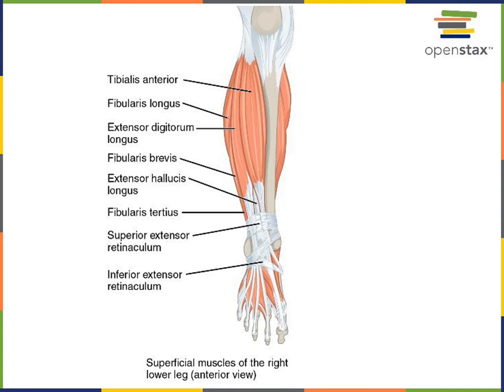Tibialis anterior is located just lateral to the anterior crest of the tibia. The action of tibialis anterior is dorsiflexion of the talocrural joint — commonly referred to as the ankle joint. So tibialis anterior performs dorsiflexion at the talocrural, or ankle, joint.